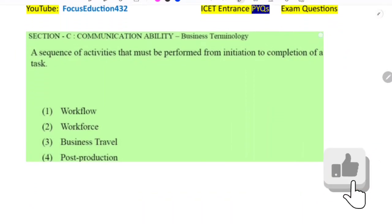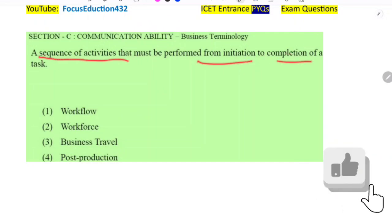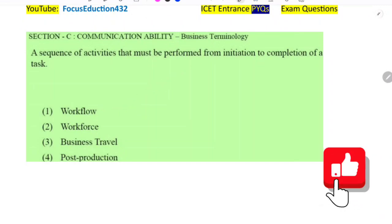Next question. This is from business terminology. A sequence of activities that must be performed from initiation to completion of a task, from starting to end. Sequence of activities, one after another, we do series of steps. What is that known as? Very simple, this is workflow. From initiation to completion, the sequence of activities or steps, workflow.